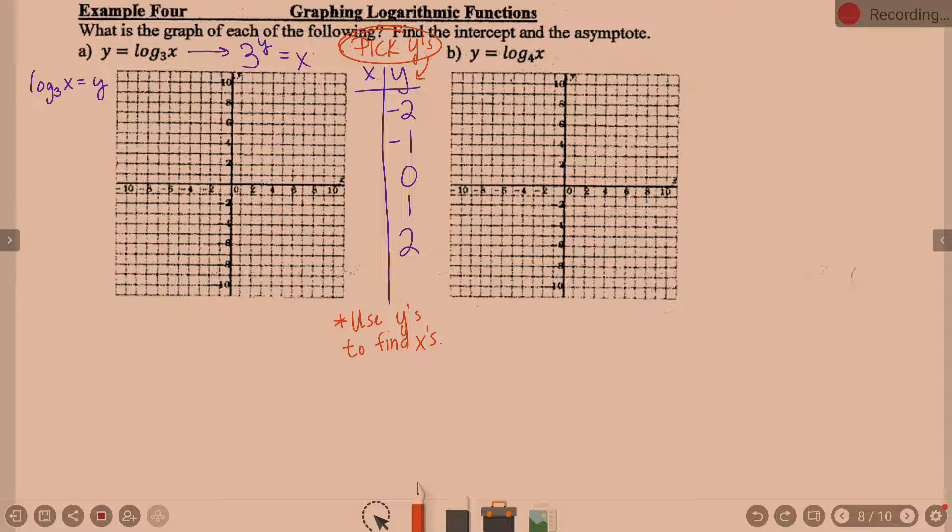Let's start at the bottom. If we put 2, this is a y value, so we're putting 2 into y. What's 3 to the second? 9. So that 9 is my x. Put in 1. 3 to the first? 3. Now we're going to put in 0. 3 to the 0? 1. Anything raised to the power of 0 is always 1.